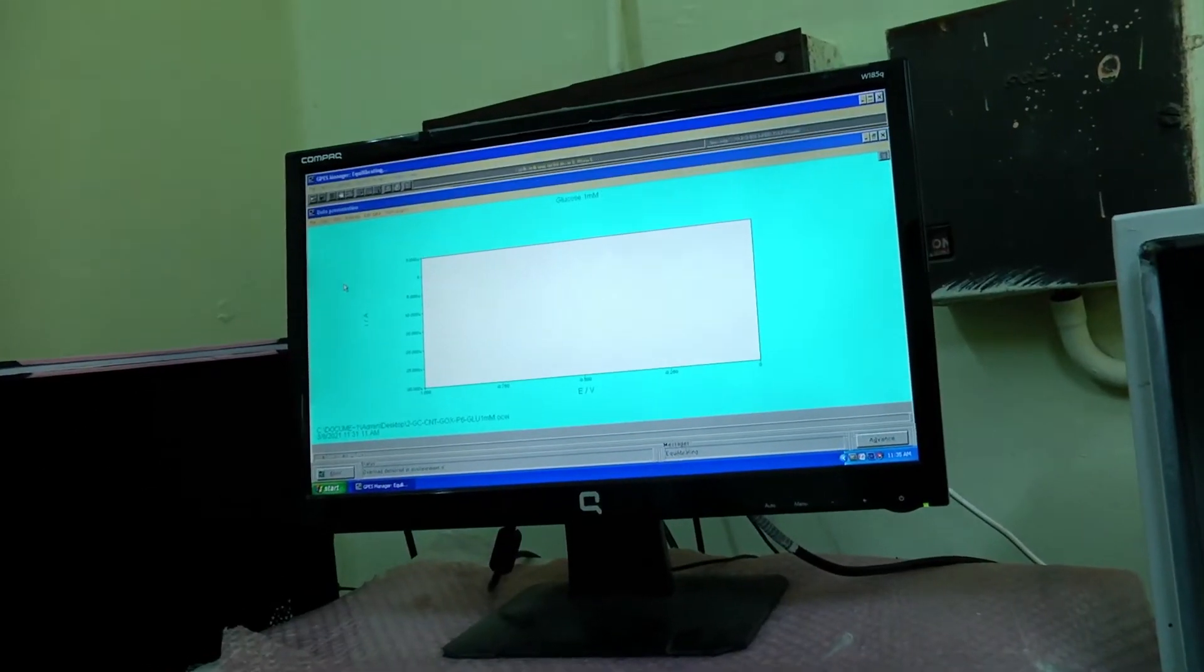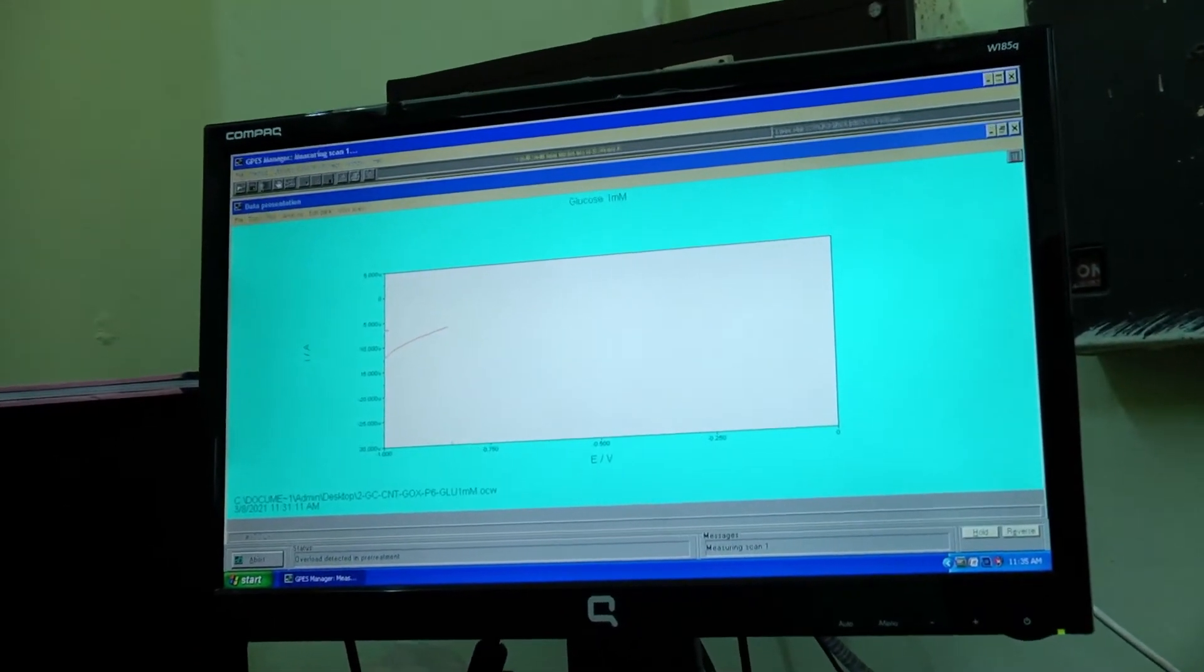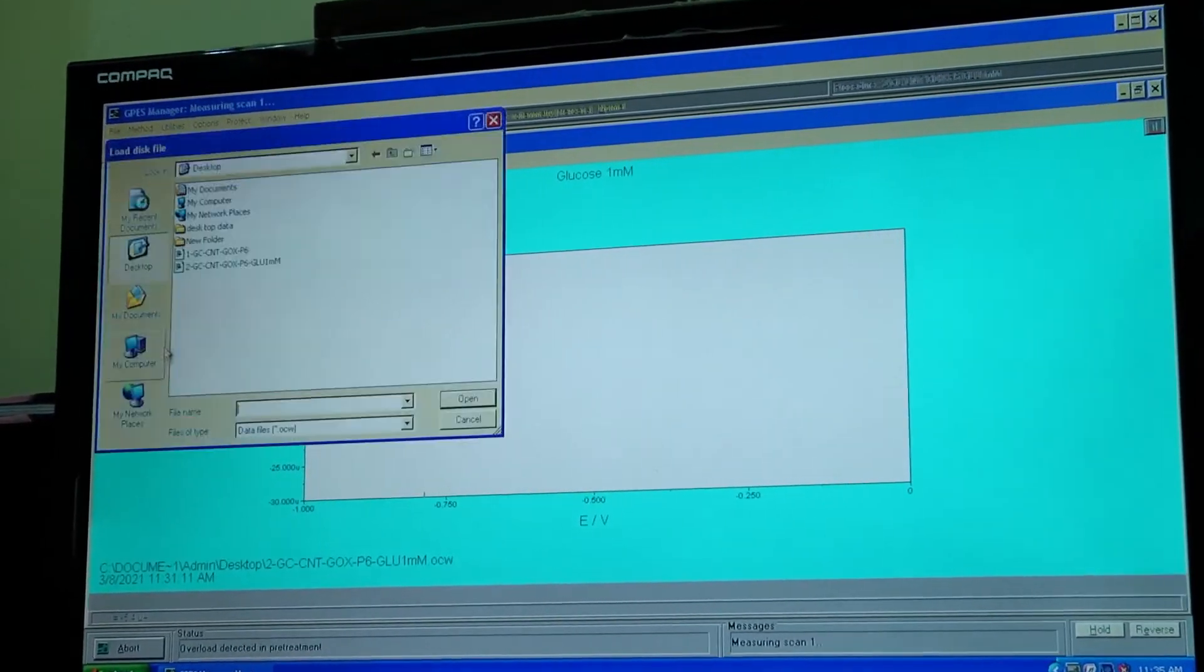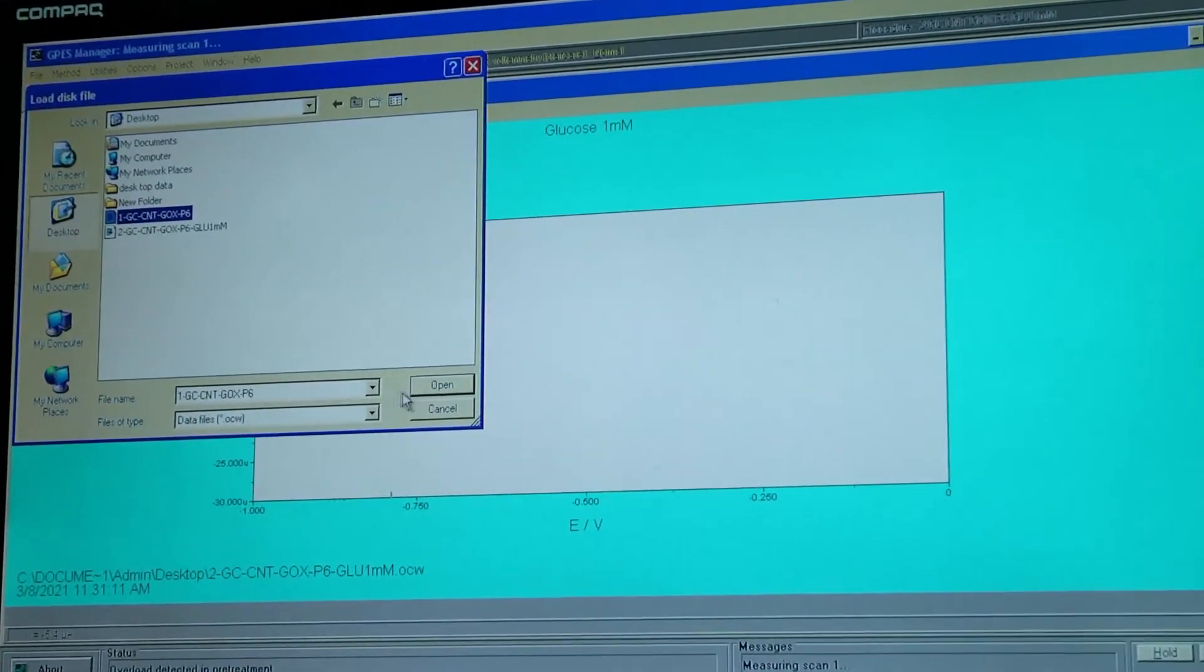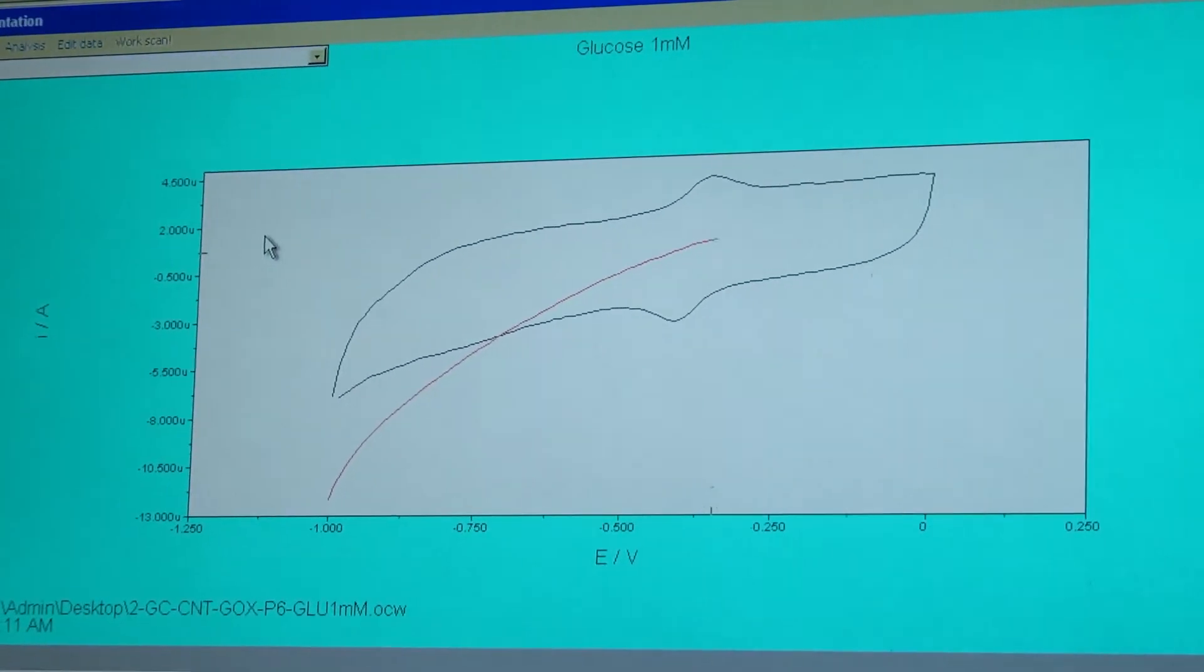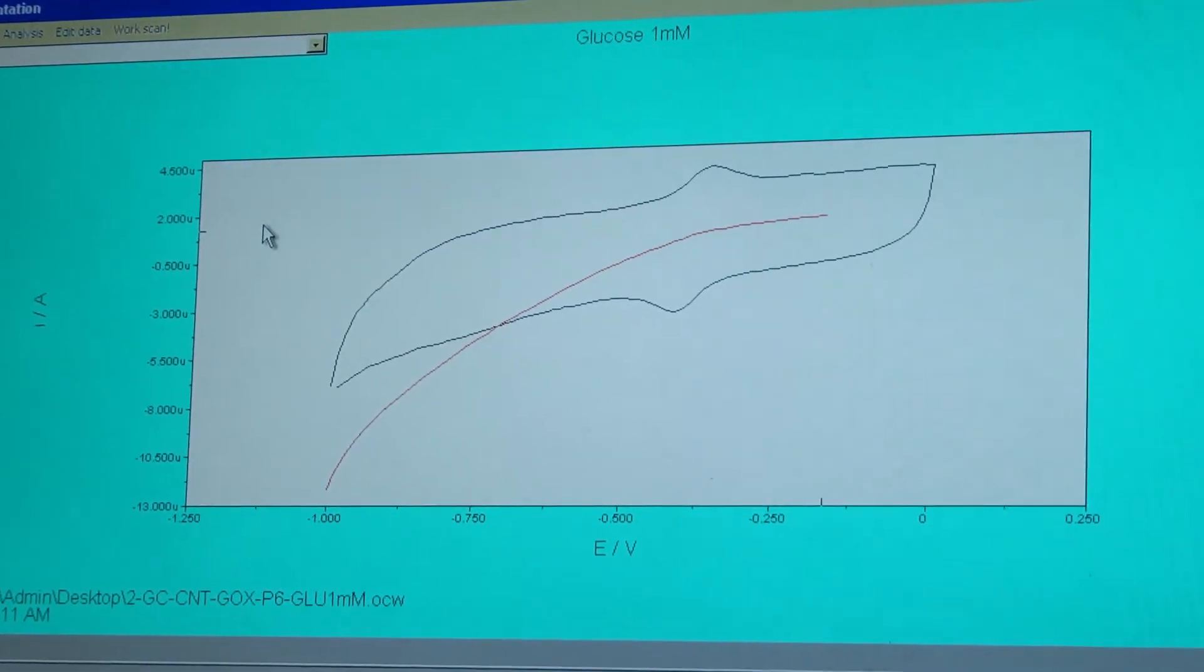Then the corresponding CV is recorded over a potential ranging from minus 1 to 0 volt. As you can see, compared to the CV of enzyme modified electrode before the glucose addition, the current is increased due to the reduction of hydrogen peroxide produced from the enzymatic reaction.